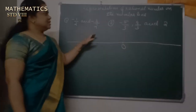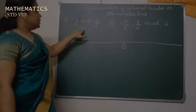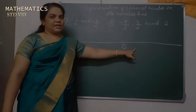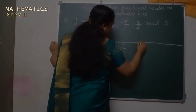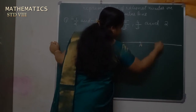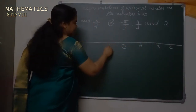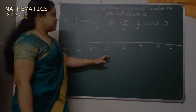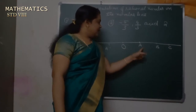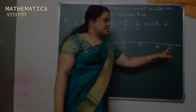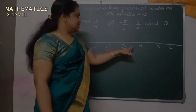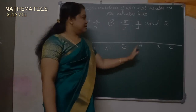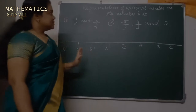How can we represent a rational number on a number line? The first question is: minus 1 by 2 and minus 3 by 2. We label the positive side as A, B, C, etc., and the left side as A dash, B dash, C dash, etc. The positions on the number line are positive 1, 2, 3, and on the left side minus 1, minus 2, minus 3, etc.